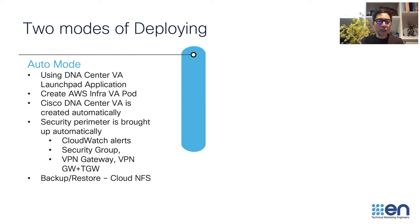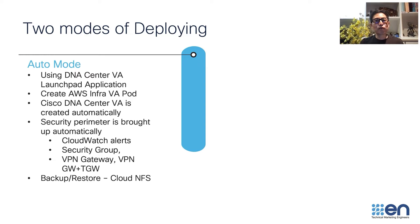In the Auto Mode, we provide you with a VA launch pad in which we will create the AWS Infrastructure VA pod for you. Within that VA pod, we create VPC subnet security perimeter like security group for inbound and outbound traffic for your AWS to your enterprise network. We will also create CloudWatch alert to monitor your VA pod, and we will create a VPN gateway and/or TGW. Within that VA pod, we also create a cloud backup for your DNA VA.